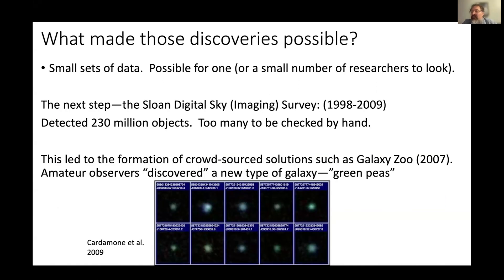What made these discoveries possible was that the data was small, so one or a small number of researchers could look at everything and use human intelligence to do the classification. The next step occurred with the Sloan Digital Sky Survey, whose imaging part took about ten years and detected 230 million objects — as opposed to the few thousand in a previous CCD image. Of course, 230 million is too many to examine by hand, so the next step was crowdsourcing: many human intelligences, which led to the formation of Galaxy Zoo.